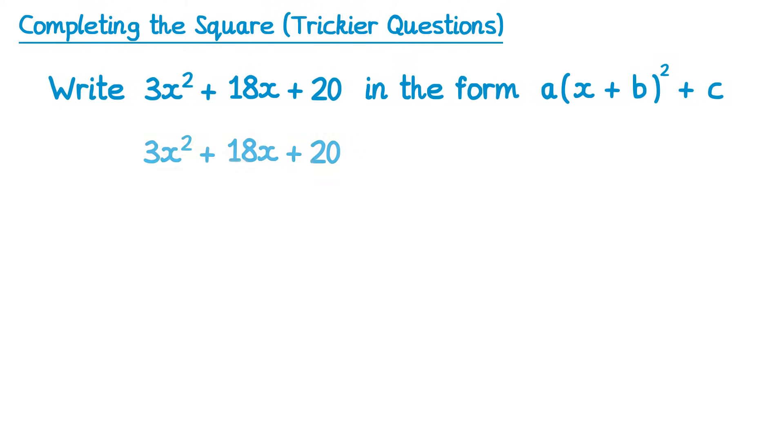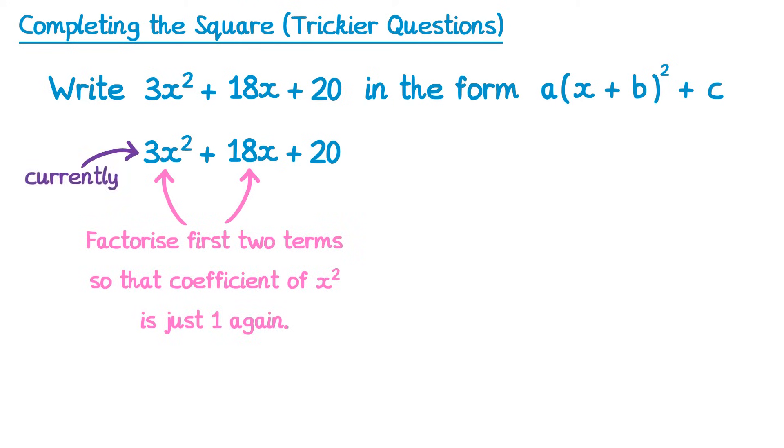So how do we approach a question like this? Well what we do is we factorise the first two of the terms, so that the coefficient of x squared is just 1 again. Currently the coefficient of x squared is 3, so that's the number that we would factorise out. I then draw two large brackets, and I would always make these quite large brackets because there are going to be brackets inside these brackets in a moment, and you don't want to get confused.